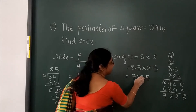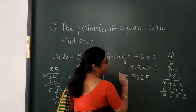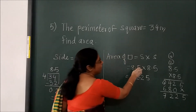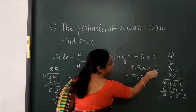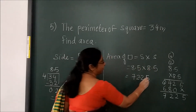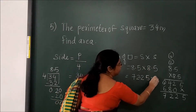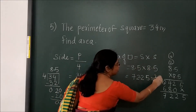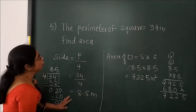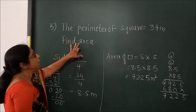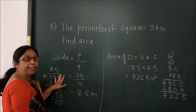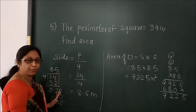So the area is 72.25 meter squared. In this way you can solve the area — first find the side.